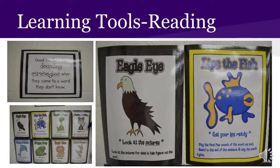Students learn decoding strategies in addition to phonics, spelling, and vocabulary in order to learn to read. Decoding strategies give students specific ways to problem solve when they come to a word they don't know. Decoding strategies include looking at the pictures, getting lips ready for the first sound, chunking, and stretching out the word. Each strategy is associated with an animal character in order to help students remember all the strategies.